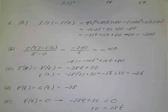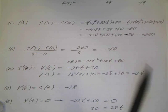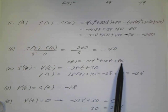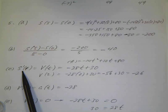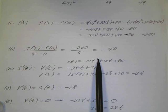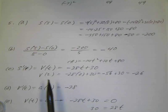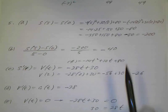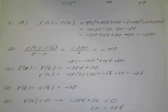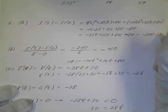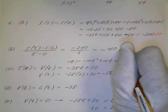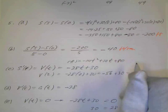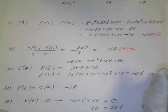For instantaneous velocity at 2 seconds, velocity is the derivative of the position function: v(t) equals negative 28t plus 30. At t equals 2: negative 28 times 2 is negative 56, plus 30 is negative 26 feet per second.